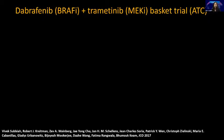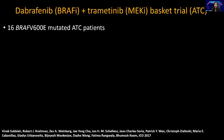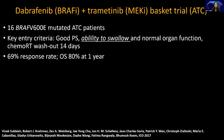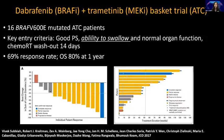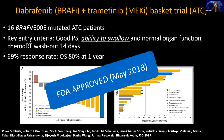Moving on to the BRAF inhibitors: dabrafenib plus trametinib for ATC — the patient must have a BRAF V600E mutation, not for fusions. The original study showed a 69% response rate and hadn't met median overall survival, but this was really a home run and was approved based on this very small study.